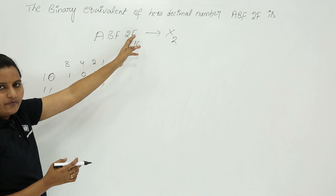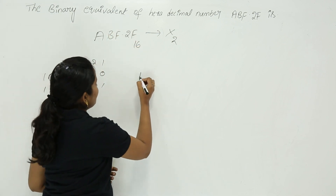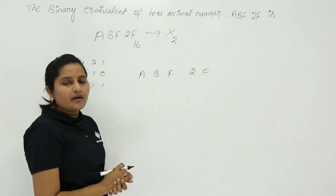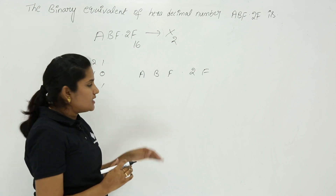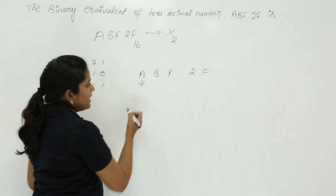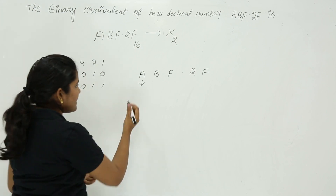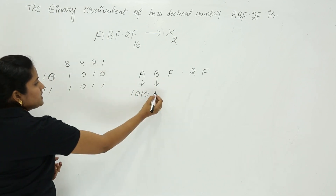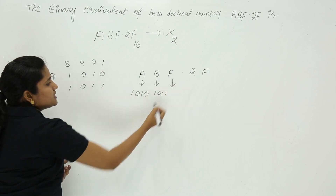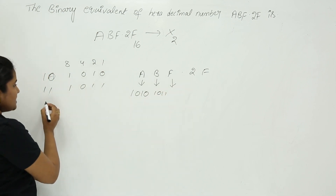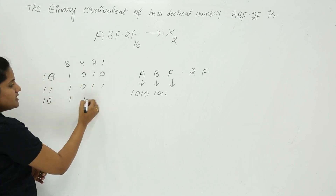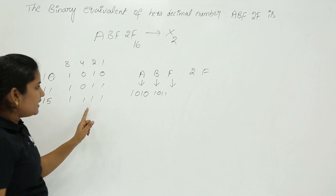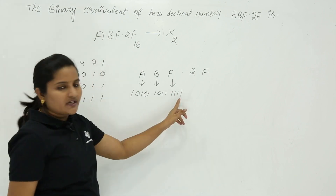In the same way you can get the binary for F, 2, and again F. Take the given number A, B, F . 2 F. We have direct conversion from hexadecimal to binary: decode A into 4-digit binary as 1010, decode B into binary as 1011, and decode F into binary. F means 15, so all four digit places are needed — the binary for F is 1111.